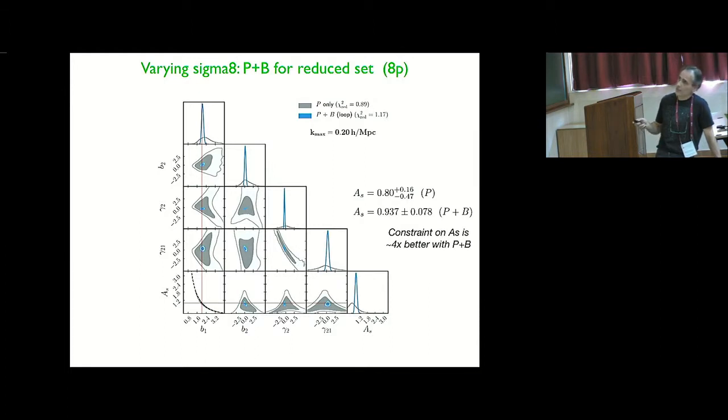Once I add the bispectrum information, you can see that it breaks that degeneracy. And once I add bispectrum information, that constraint goes, again, down by a factor of four.